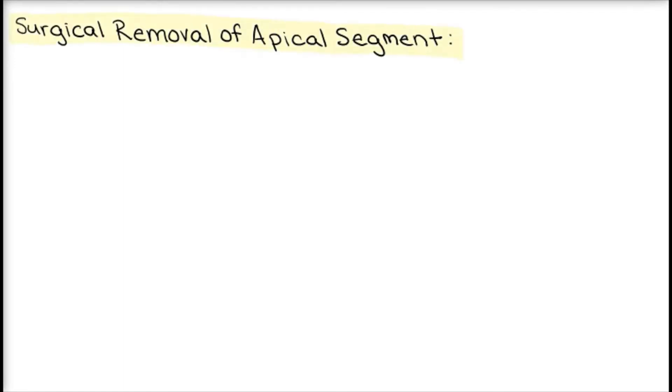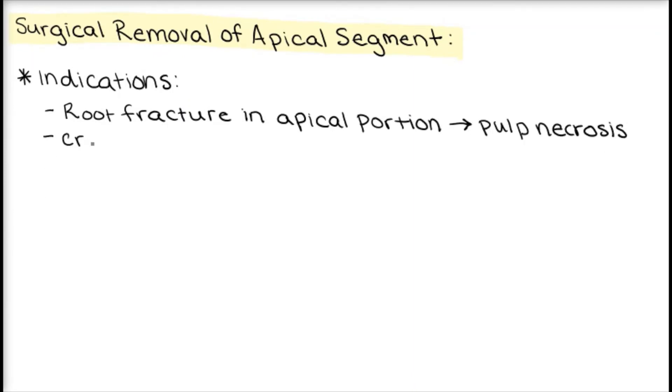The final procedure we'll cover today is the surgical removal of a fractured apical segment. It is indicated when a fracture in the apical region of a root leads to pulpal necrosis. To be considered for this procedure, the coronal portion of this tooth must be restorable and functional.